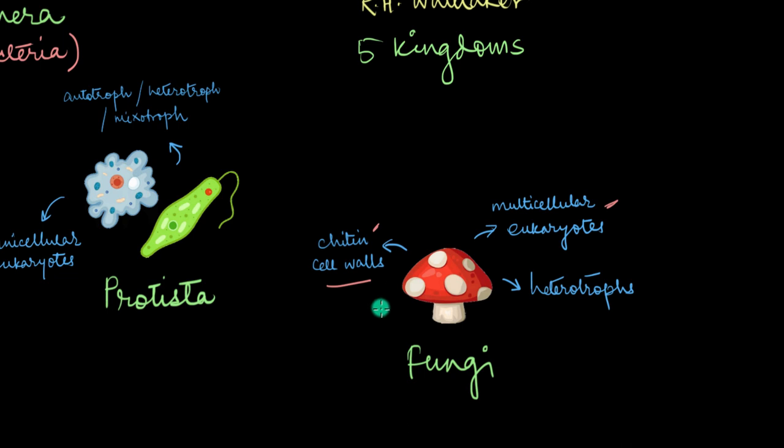Meanwhile, a plant's cell wall is made up of cellulose. So you see how important the composition of cell wall is over here for this classification. Fungi are also exclusive heterotrophs and most of them get their nutrients from dead and decaying matter.